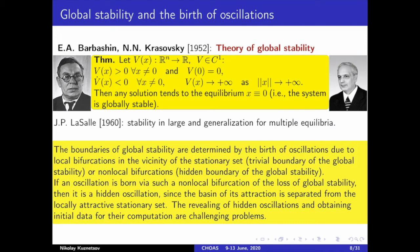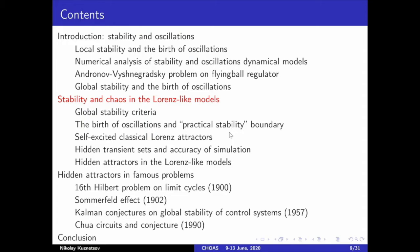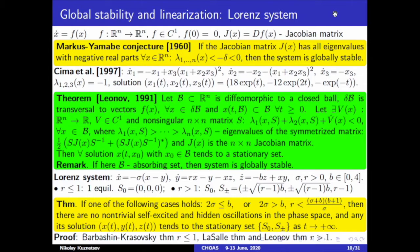Now let us consider corresponding results on stability and the birth of oscillations in the Lorenz-like model. The construction of global Lyapunov functions for Lorenz-like models is a challenging problem. Therefore, various attempts were made to use linearization for the study of global stability as was done for the flying ball regulators. The difficulties on this way can be demonstrated by the famous Markus-Yamabe conjecture and corresponding counter-examples, where the linearized model is stable at any point of the phase space, but still there exists a hidden oscillation not tending to the unique equilibrium.